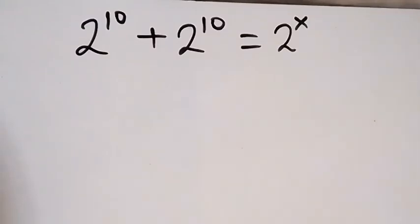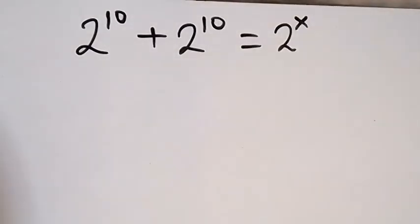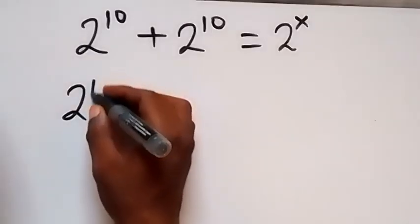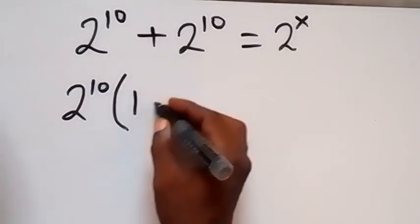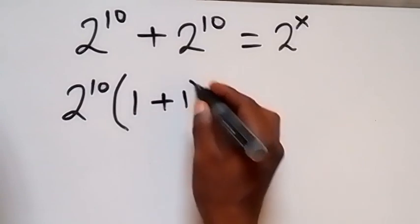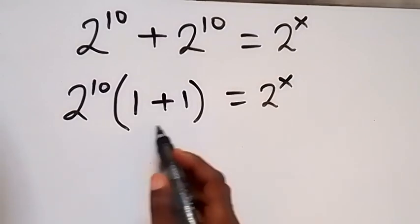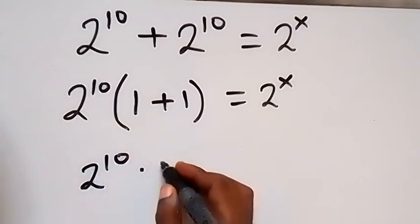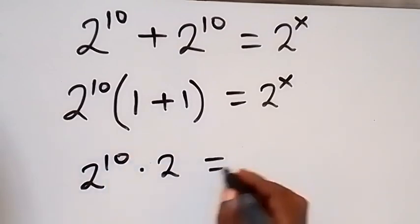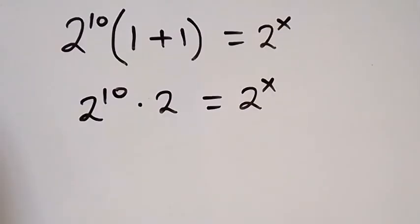Hello, you are welcome. How to solve this problem: 2 raised to power 10 plus 2 raised to power 10 equals 2 raised to power x. From here, let's take 2 raised to power 10 out. When we divide by 2 raised to power 10, this will mean 1 plus 1, which equals 2 raised to power x. So we have 2 raised to power 10 multiplied by 2 equals 2 raised to power x.